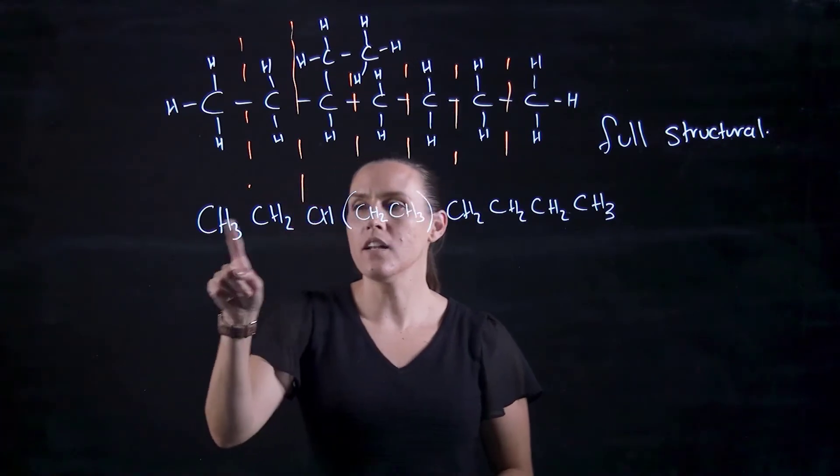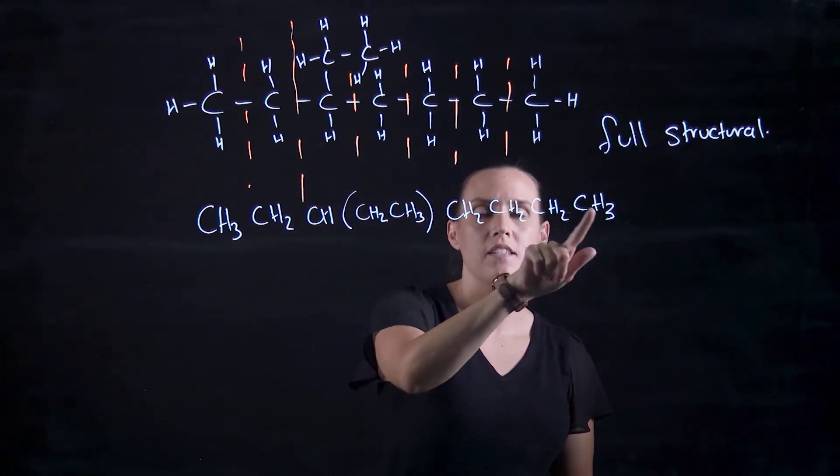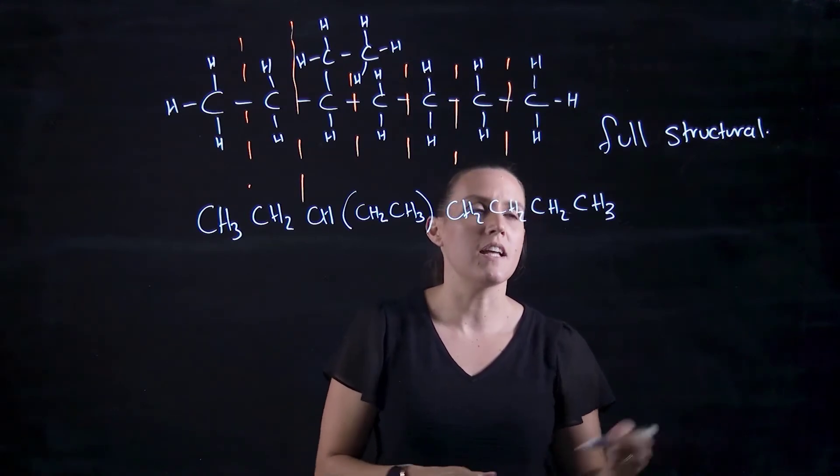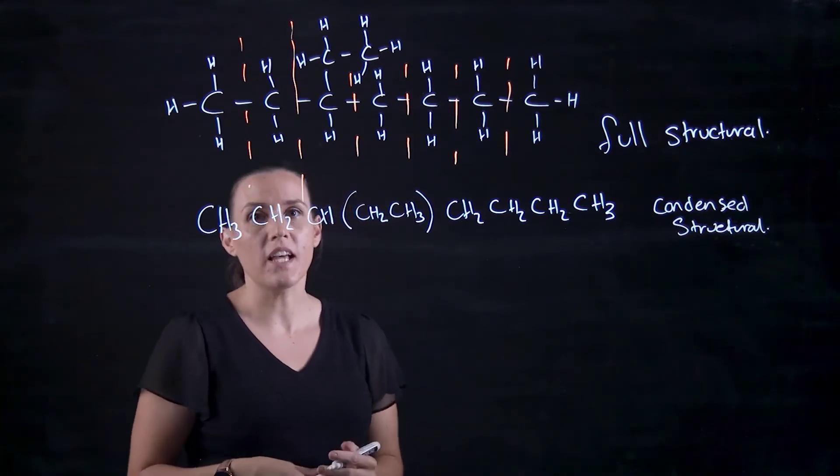So I've got one, two, three side chain, four, five, six, seven carbons. So that's my condensed, and you can use the word diagram or formula.